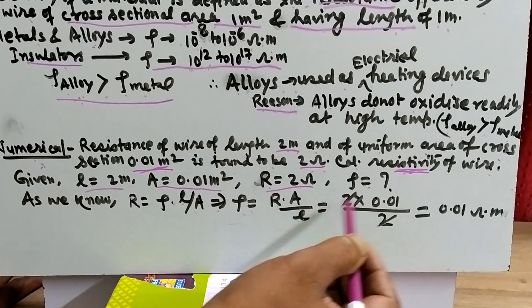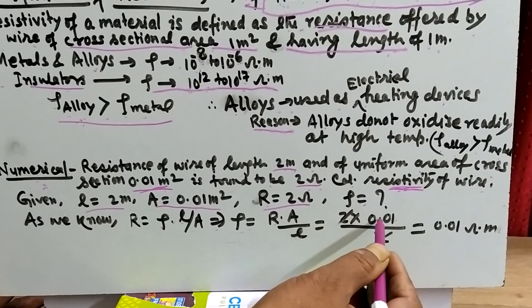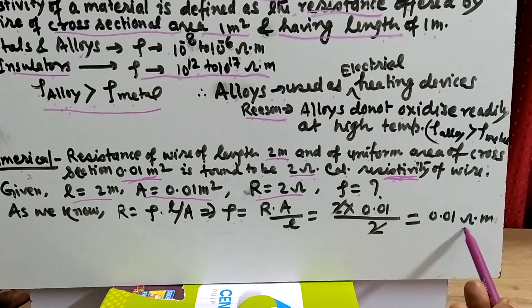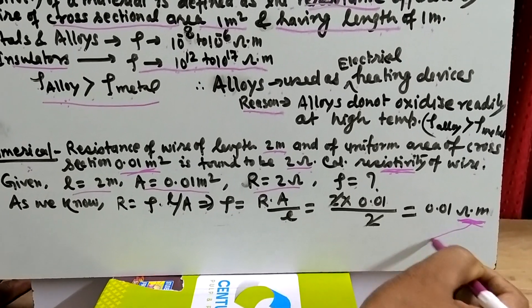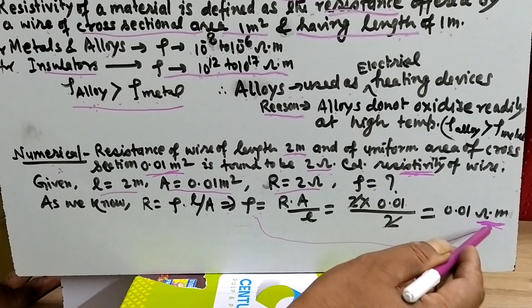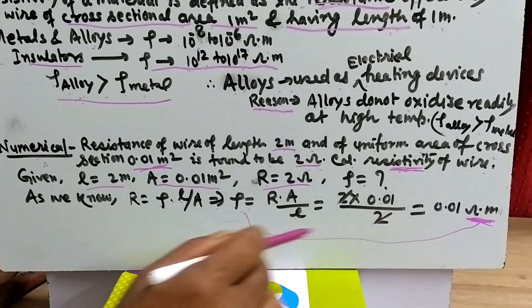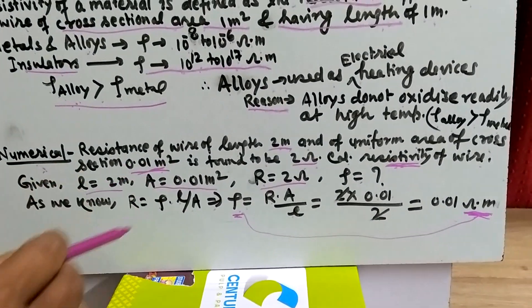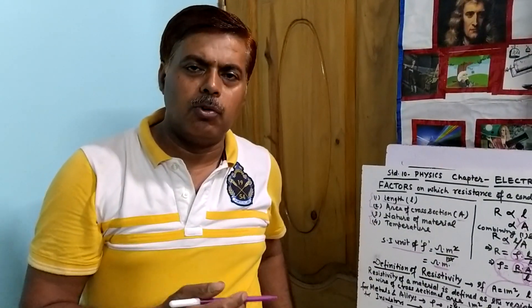Putting the values: R is 2, A is 0.01, and L is 2. The 2s cancel out, leaving rho equals 0.01 ohm meter. Ohm meter is the SI unit of resistivity, so the final answer is 0.01 ohm meter. In this way you can solve more numericals based on resistivity and get mastery over it.